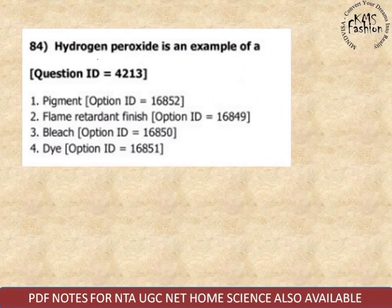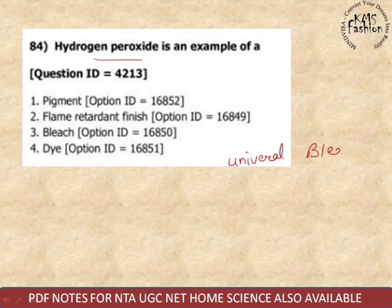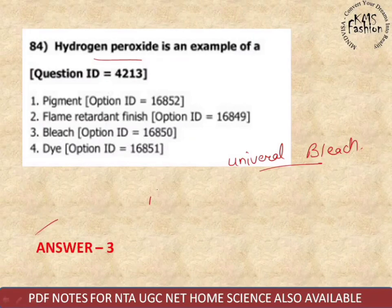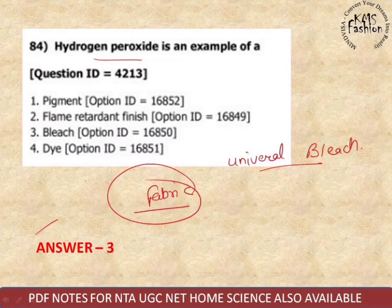Next question: hydrogen peroxide — what is it? It is a universal bleach. You can use it on almost every kind of fabric, so it is called universal bleach.